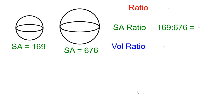Here we have two spheres. All spheres are automatically similar to each other because they're the same shape — just different sizes. The same is true for all cubes. However, not all rectangular prisms or pyramids are automatically similar — you'll need to check by setting up an extended proportion.